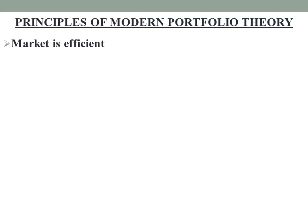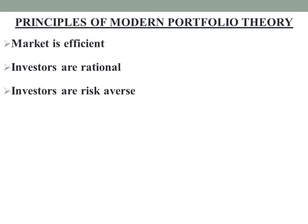The first principle of modern portfolio theory is that the market is efficient. The second one is that investors are rational. Rational investors seek minimum risk and maximum return. The third one is that investors are risk-averse.